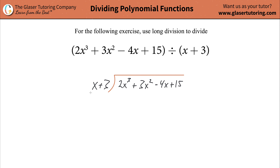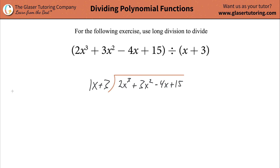Now we're going to look at our divisor and locate the term with the highest power of x in it. That's pretty simple because there's only one term that has x in it. We're going to take that and divide it into the term with the highest power of x in your dividend. So we do 2x cubed over x — that x cancels the x, the exponent reduces down by one — so you're left with 2x squared. That is the quotient, and you're going to plug it in above the long division symbol. So this is going to be 2x squared.